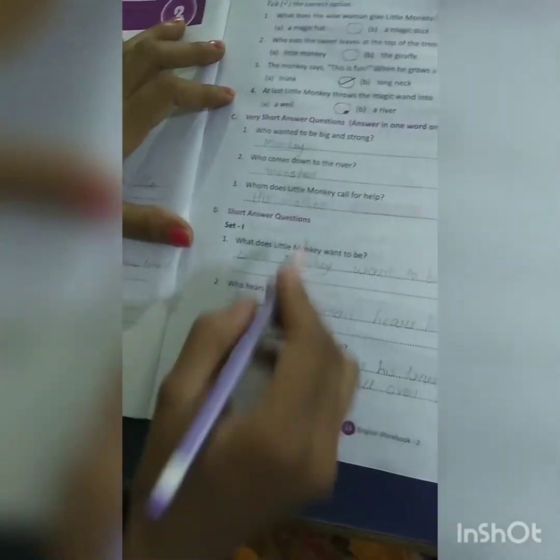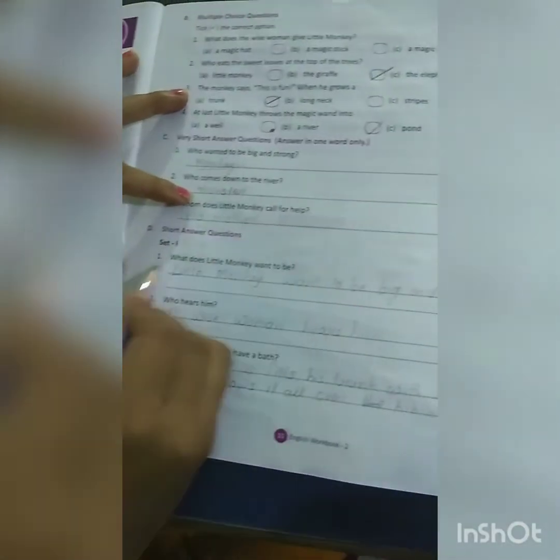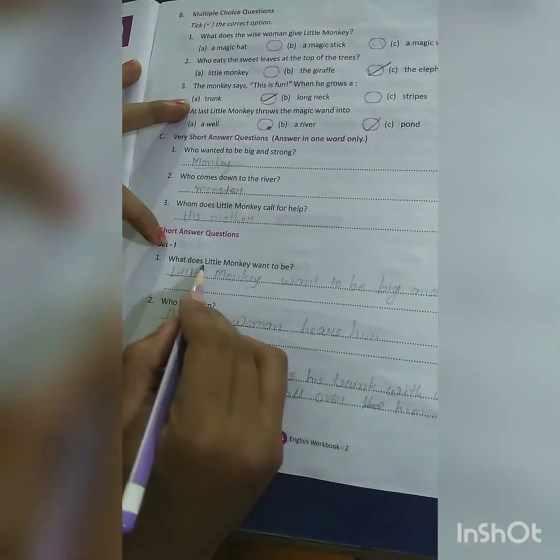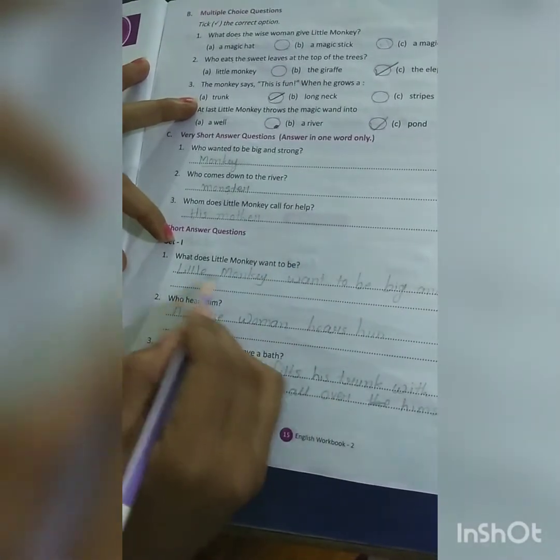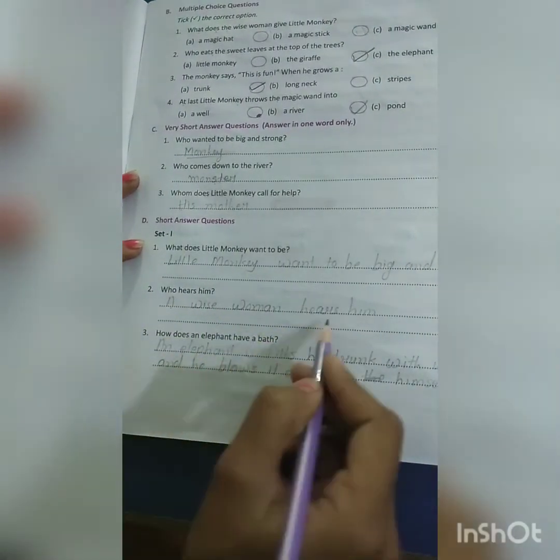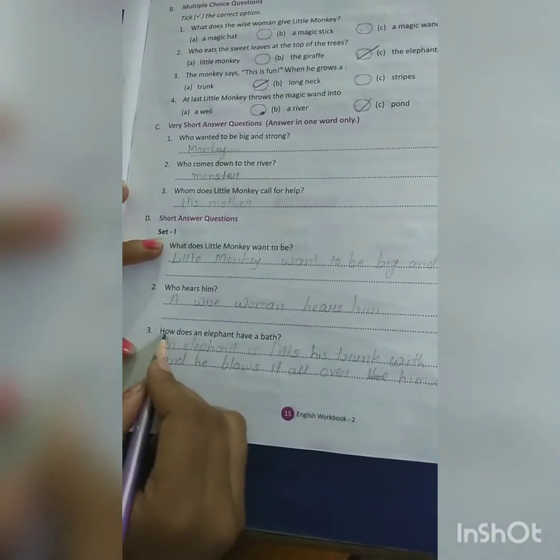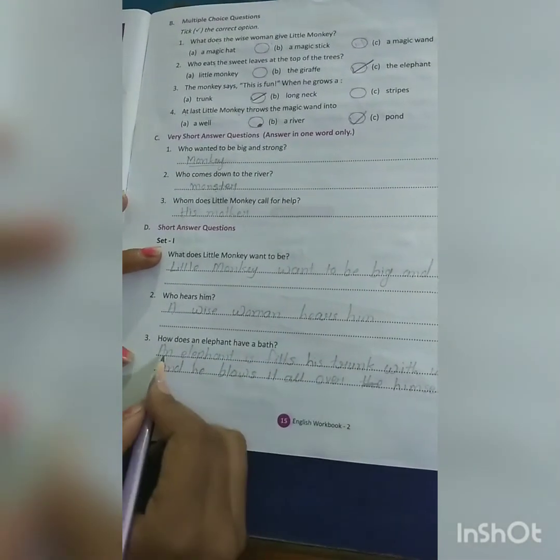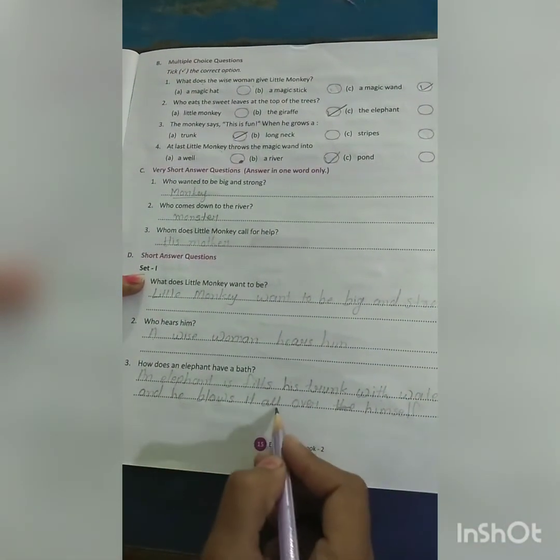Short answer questions. Question number 1: What does little monkey want to be? The little monkey wants to be big and strong. Who hears him? A wise woman hears him. How does an elephant have a bath? An elephant fills his trunk with the water and he blows it all over himself.